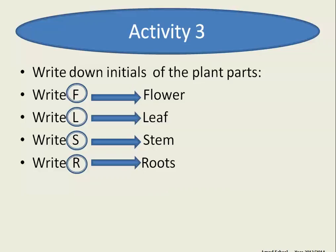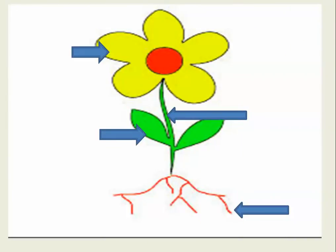Where is the flower? This is the flower. We will write F. And where is the stem? That is the stem. We will write S. And this is the leaf. We will write L.